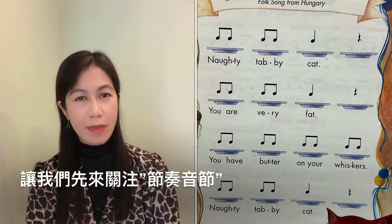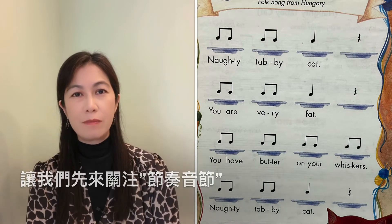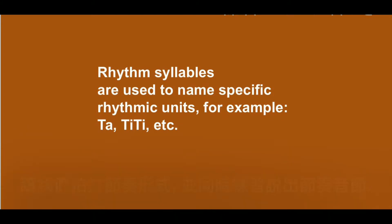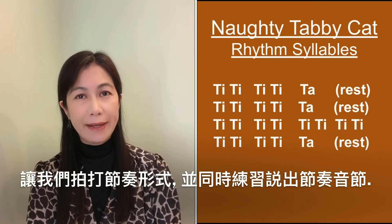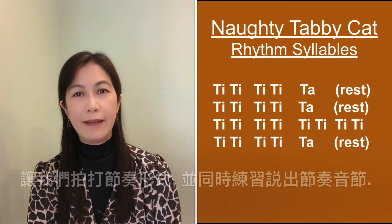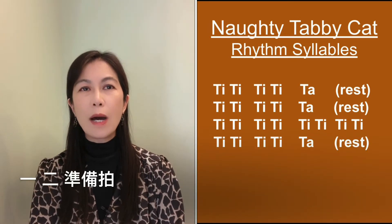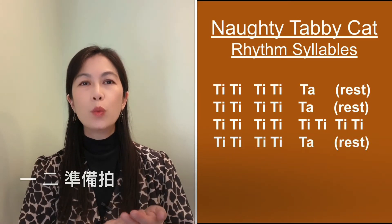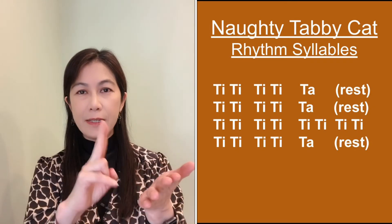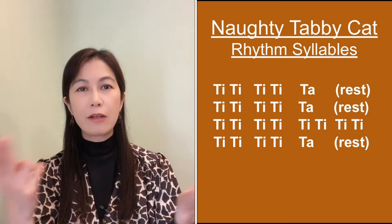Let's pay attention to the rhythm syllables. Written syllables are used to name specific rhythmic units — for example, ta and titi. Let's clap the rhythm patterns while speaking the rhythm syllables together. One, two, ready, clap: ti-ti ti-ti ta.